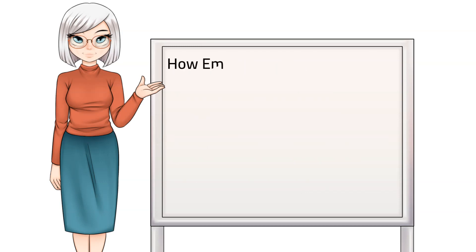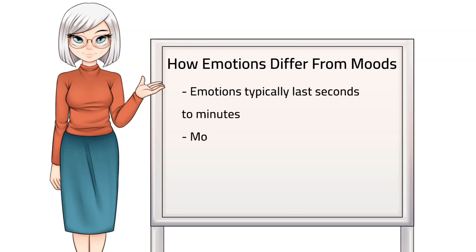How are emotions different from moods? Emotions differ from moods in that emotions typically last seconds to minutes, whereas moods can last hours to days. So if we say, 'I'm feeling down,' that's likely referring to a mood.